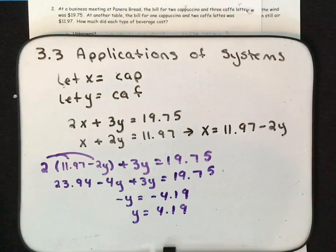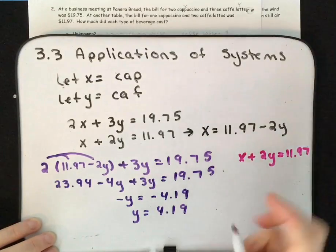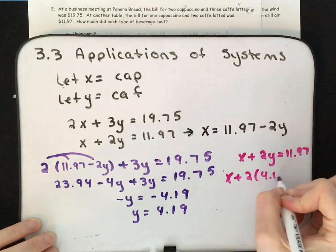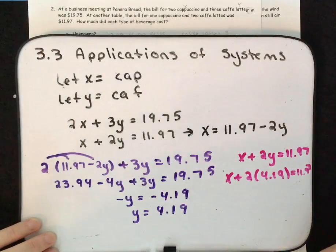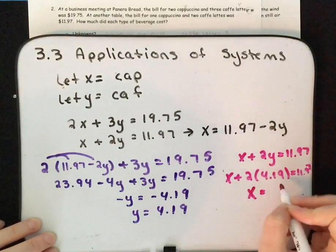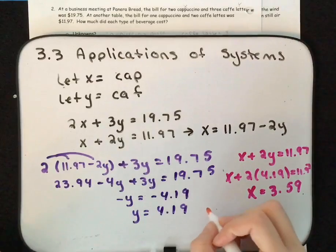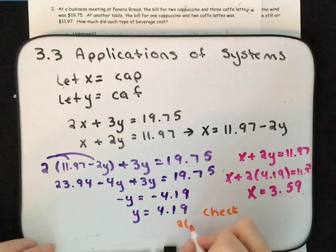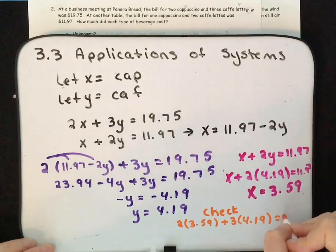Now I need to find X. I know X plus 2Y equals $11.97, and Y is $4.19. So X plus 2 times $4.19 equals $11.97. Solving that gives X equals $3.59. We can check by substituting into the first equation: 2 times $3.59 plus 3 times $4.19 equals $19.75. Multiplying and adding confirms the answer.